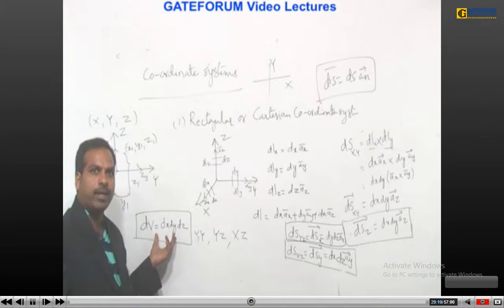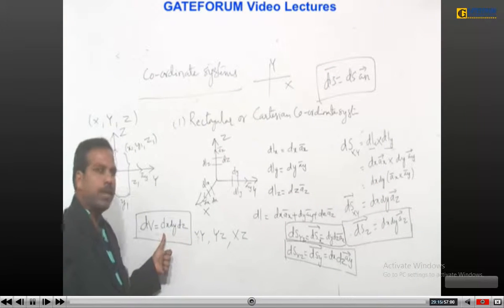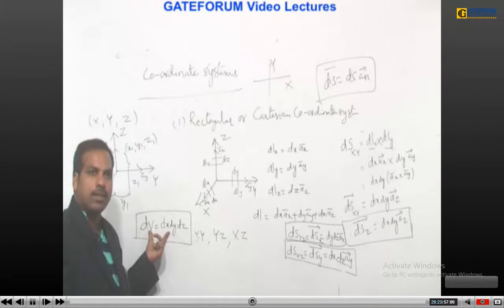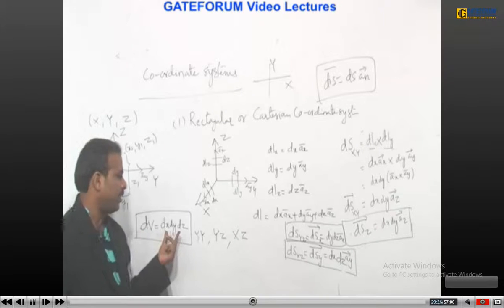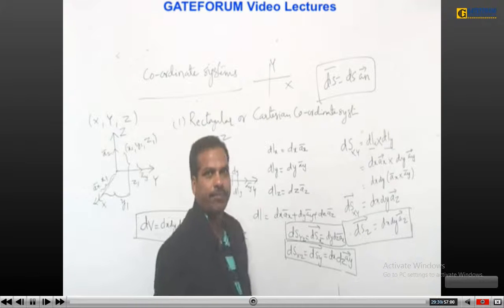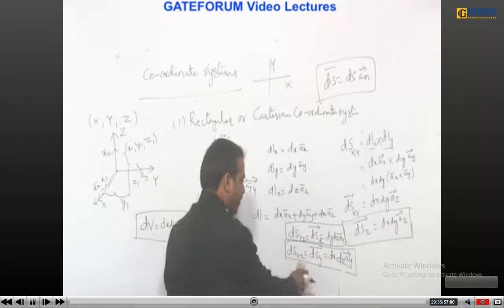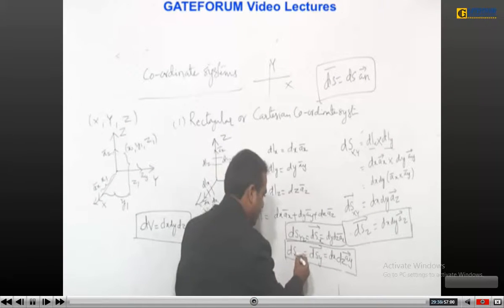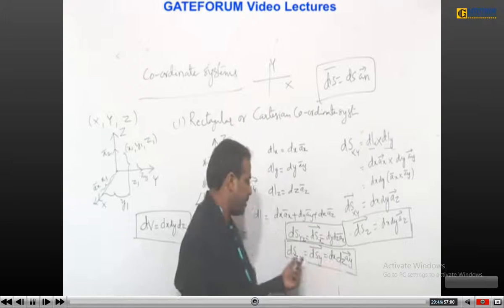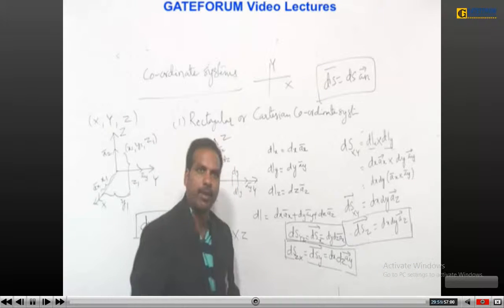Differential surfaces: made up of xy will be along z direction; made up of yz will be along x direction; made up of xz will be along y direction. For the differential volume, you cannot take a vector product because either dot or cross product becomes zero. But there is a finite existence of differential volume, so dV = dx·dy·dz. For the xz surface, it is dx·dz·āy, and if written as zx it is also dx·dz·āy.